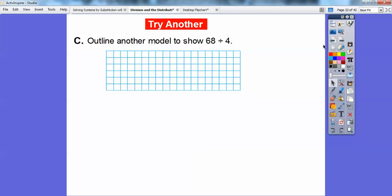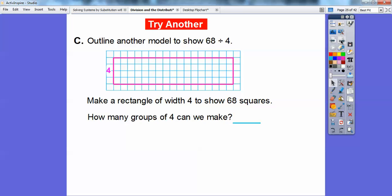Let's try another one. Let's outline another model to show 68 divided by 4. So I'm going to make a rectangle that has width of 4. So I'm not going to count them right now, but there it is right there. So there are 68 squares right there. And if we count up all those 68 squares, how many groups of 4 can we get?